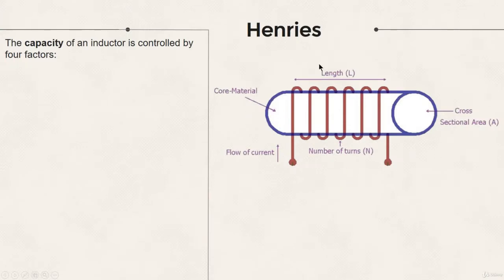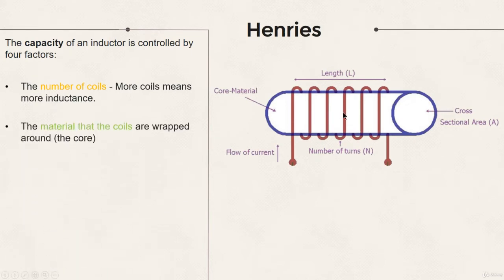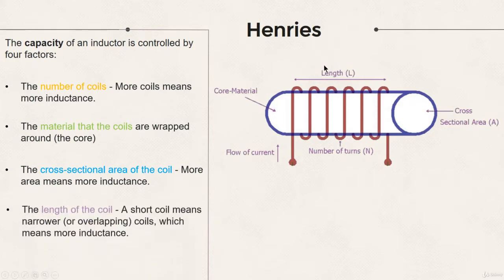So the capacity of an inductor is controlled by four factors. The first one is the number of coils. More coils means more inductance. The second one is the material that the coils are wrapped around. The third one is the cross-sectional area of the coil. More area means more inductance. And the last one is the length of the coil. A short coil means narrower coils, which means more inductance. Putting iron in the core of an inductor gives it much more inductance than air or any non-magnetic core would. The standard unit of inductance is the Henry. And the equation for calculating the number of Henries in an inductor is the following.